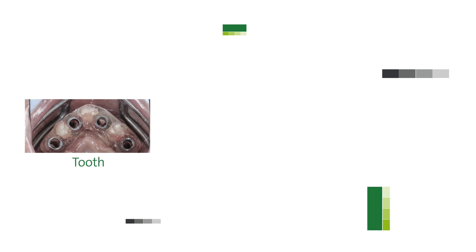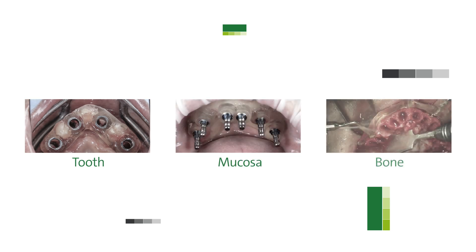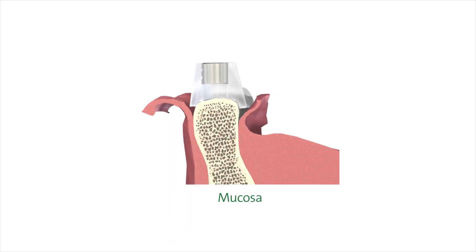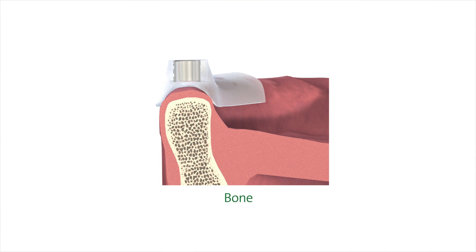There are different types of surgical guide designs related to the type of support. A teeth-supported, mucosa-supported, or bone-supported guide. In teeth-supported guides, it is important to have at least three teeth available for stability. A mucosa-supported guide is used in edentulous cases and requires the scan of the prosthesis. Bone-supported guides are used in partially or fully edentulous arches, and you should have at least three millimeters of supporting bone.